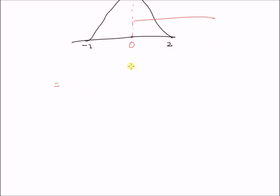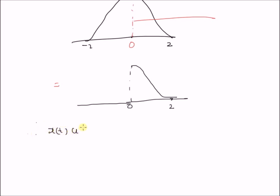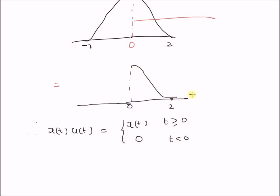The peak is still at 0, the minimum is at 2, and the rest of the value is 0. Therefore x of t multiplied by u of t equals x of t for t greater than or equal to 0, and 0 for t less than 0, as illustrated by this figure showing x of t multiplied by u of t.